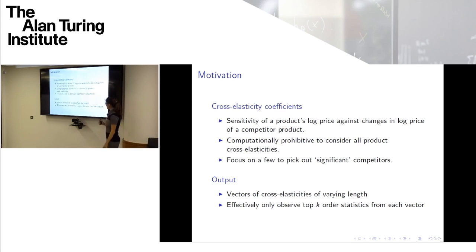So here I've named this output, but really I should have named it data. The data that we get is a set of vectors. For each product, we have a vector with a varying length. And this is how this relates back to that we basically effectively only observe the top k order statistics from each vector. Okay, this is how it relates to order sparsity.